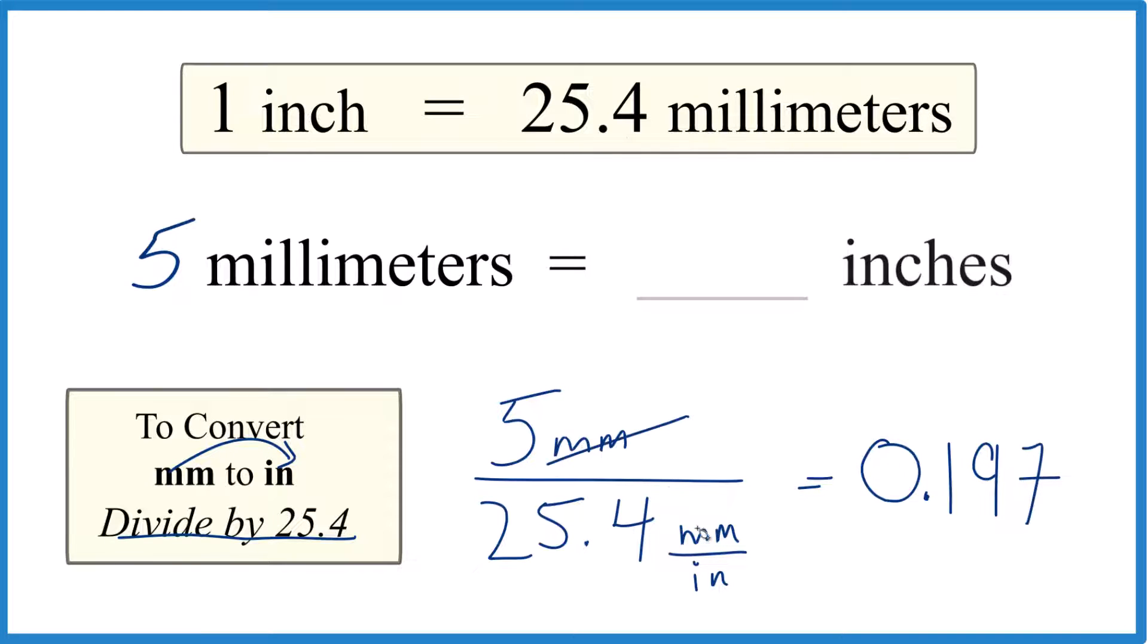Since millimeters cancel out, we're left with inches. That's what we're looking for. So five millimeters equals 0.197 inches.